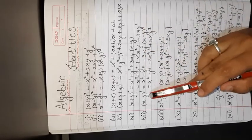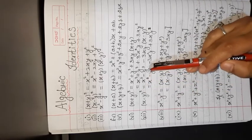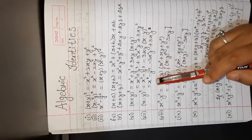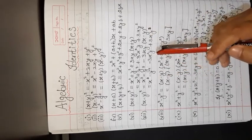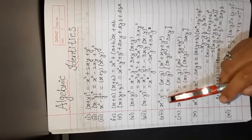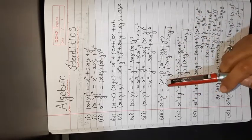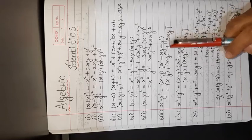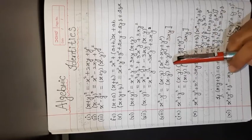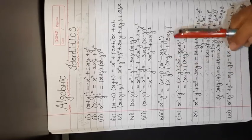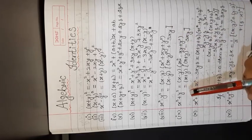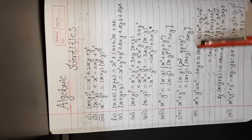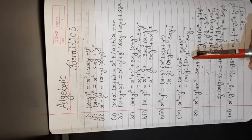Seventh, (x − y)³ = x³ − y³ − 3xy(x − y). Eighth, x³ − y³ = (x − y)(x² + xy + y²). Ninth, x³ + y³ = (x + y)(x² − xy + y²).